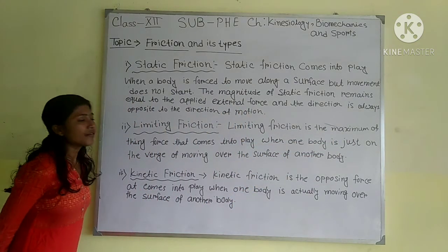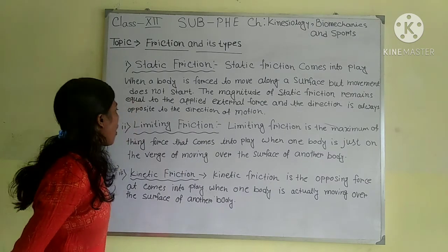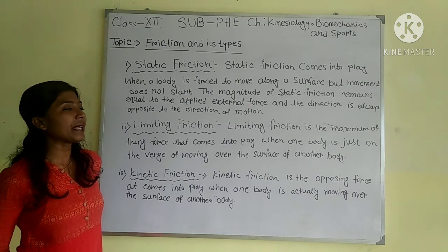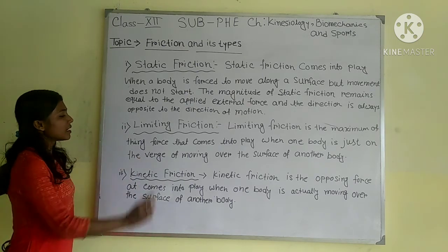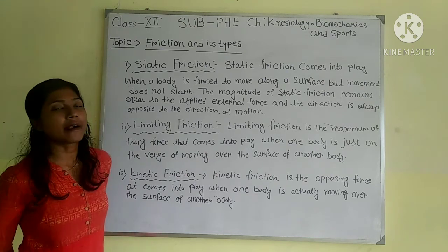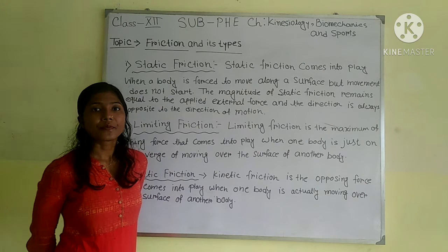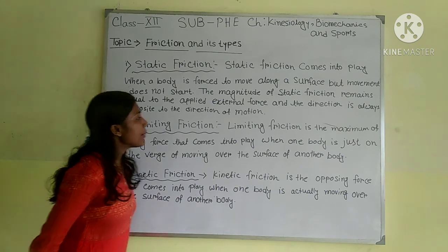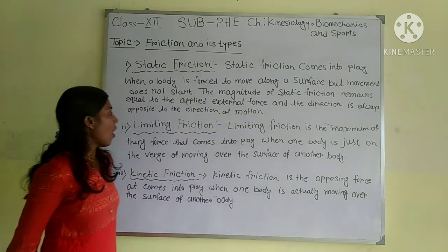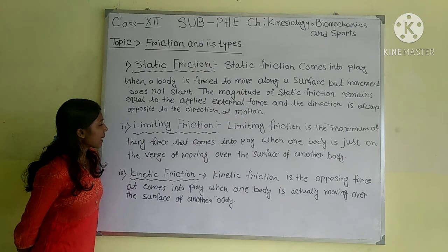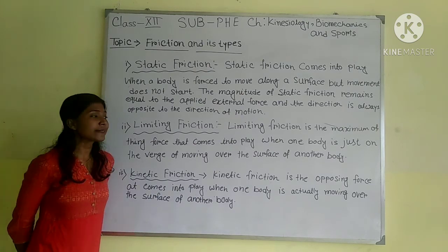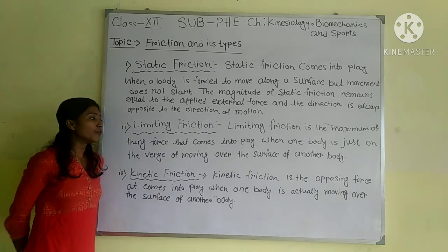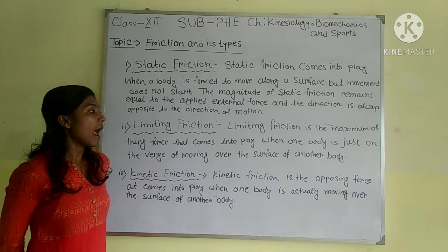Limiting friction is the maximum of the three forces that comes into place when one body is just on the verge of moving over the surface of another body.